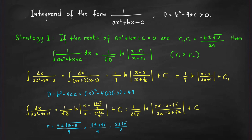For example, integrate dx over (2x² − 5x − 3). The discriminant is (−5)² − 4(2)(−3) = 25 + 24 = 49, which is greater than 0 so we can use this technique. Since the quadratic is factorable, the roots are easily found: x = −1/2 and x = 3.